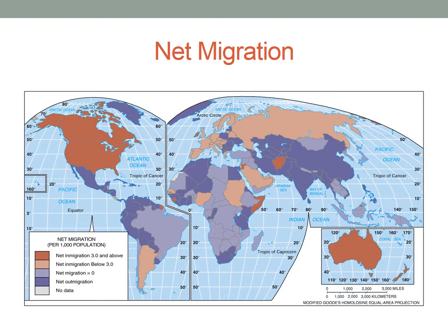Let's take a look at a map of net migration. What type of map is this, and what is the scale of analysis? It's a choropleth map at the national scale. Looking at the key: areas in red have net in-migration, with darker shades indicating more in-migration. Light purple represents net neutral migration — emigration and immigration are in balance. Dark purple represents net out-migration, where more people are leaving than coming in.